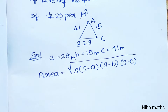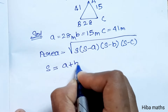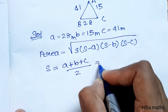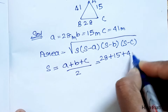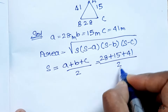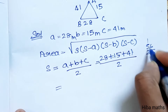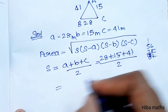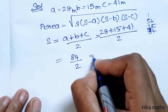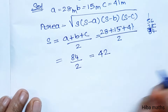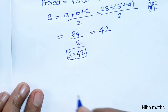First, we calculate S. S equals A plus B plus C divided by 2. So S equals 28 plus 15 plus 41 divided by 2, which equals 84 divided by 2, giving S equal to 42.